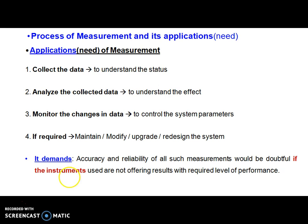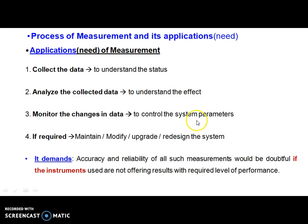The application of measurement broadly can be categorized into four basic categories. The first is collection of data, just to understand the status of what is happening. The second is analysis and collection of data, just to understand the effect — we change one parameter by keeping other parameters constant and analyze the effect. The third is to monitor changes in the data with the objective to control the parameters. And the last level of application could be to maintain, modify, upgrade, and redesign the system. This is the very broad scope of the application of the process of measurement.